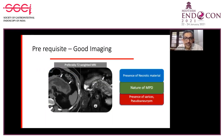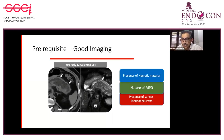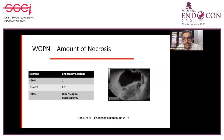The prerequisite for EUS drainage is a good imaging modality. It should be a combination of CT and MRI. MRI is preferred, especially T2-weighted MRI, to see the necrotic material, as MRI delineates necrotic material much better. It also gives an idea of the nature of the main pancreatic duct. Varices or pseudoaneurysm can be well seen on contrast-enhanced CT.